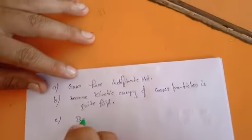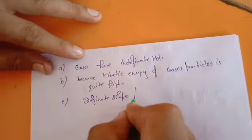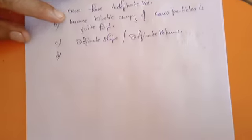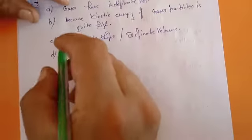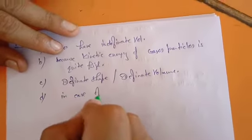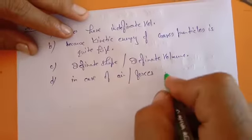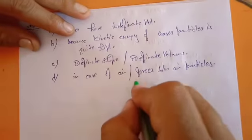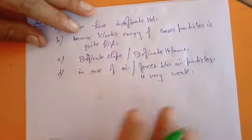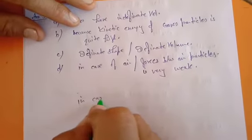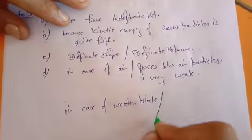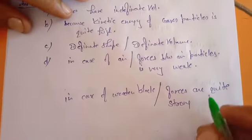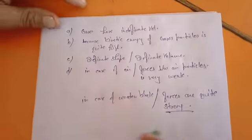Part C: a wooden table should be called a solid — of course, because it has definite shape and definite volume. Part D: we can easily move our hand through air but not through a solid block of wood. This is because in the case of air, the forces between air particles are very weak, so you can move your hand through it. But in the case of a wooden block, the forces are quite strong, so you cannot move your hand through it.